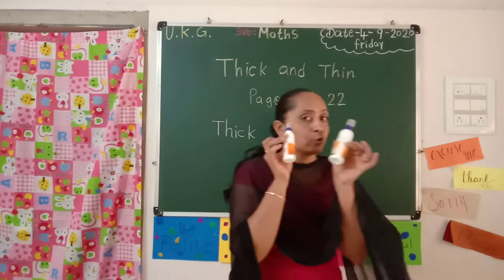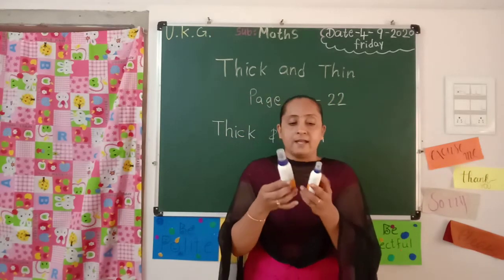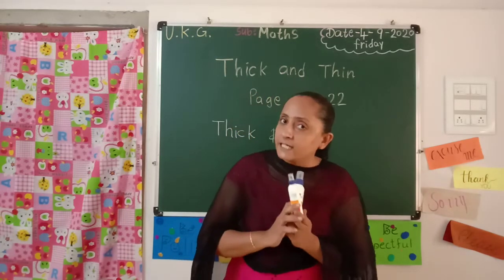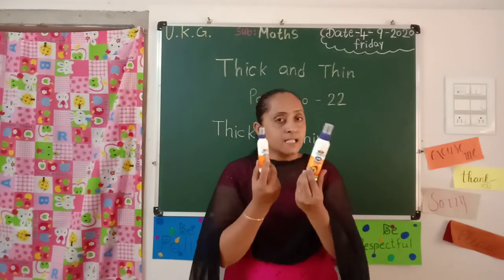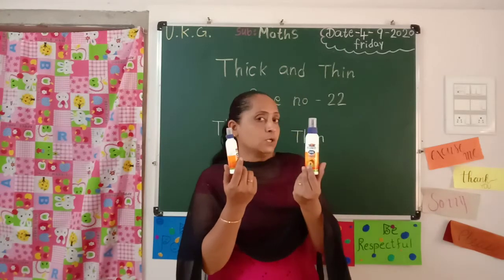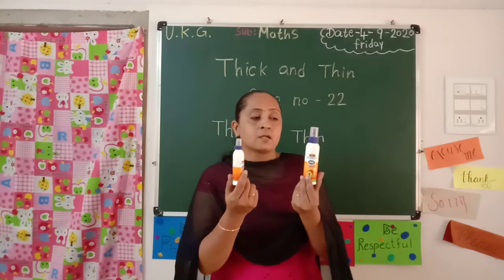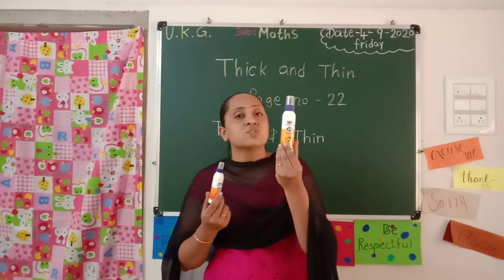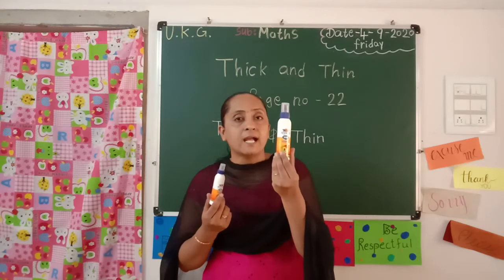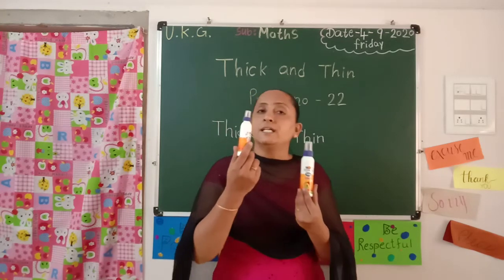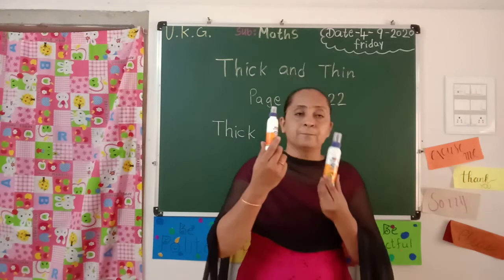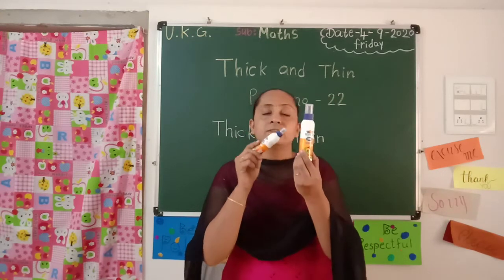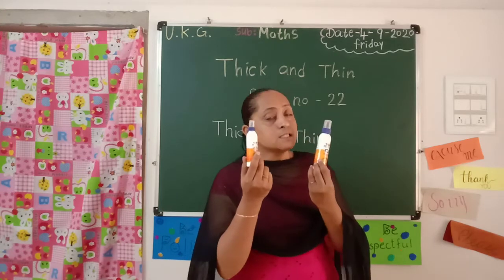I have two objects. I have two quarters. Very good. Which one is thick and which one is thin? Give me the answer. Yes — this one is thick. Thick yani chada. T-H-I-C-K thick. T-H-I-N thin. Thin yani patla. Thick and thin — this one is thick, this one is thin.